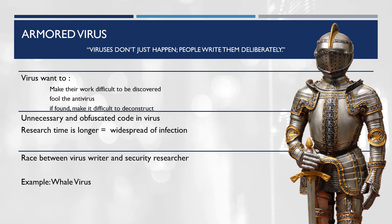An armored virus is a virus that contains a variety of mechanisms specially coded to make its detection and decryption very difficult. One of these methods involves fooling antivirus software into believing that the virus resides somewhere other than its real location, which makes it really difficult to detect and remove.